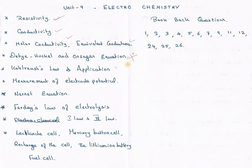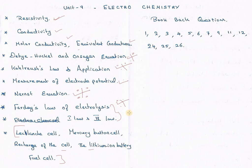We have to study Kohlrausch's Law and its applications. Then the next equation is Faraday's Law of Electrolysis — both the 1st law and 2nd law, with emphasis on the 2nd law. Also cover Measurement of Electrolysis. The important cells include the Leclanché Cell, Mercury Button Cell, Rechargeable Cell, Lithium Ion Battery, and Fuel Cell — these carry 2 marks or 3 marks possibilities.